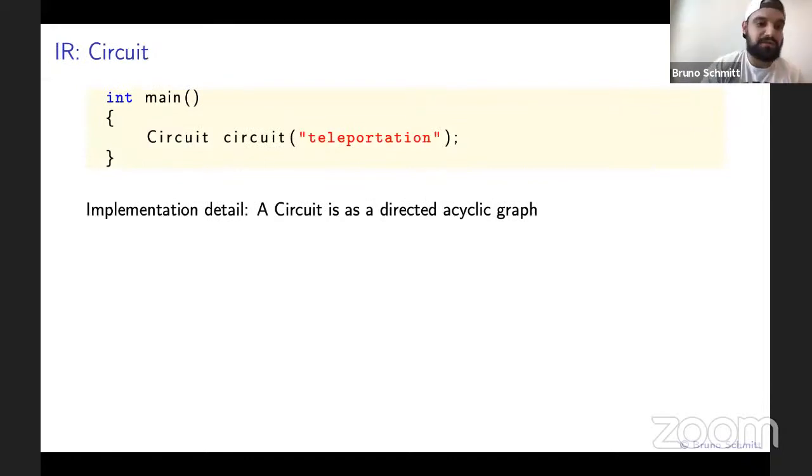We start with an empty circuit. All we need to do is instantiate a circuit object. The constructor takes as input a string that names our circuit. Here, there is a small implementation detail. The circuit is implemented as a DAG, directed acyclic graph. The implementation guarantees that all nodes are always topologically sorted.